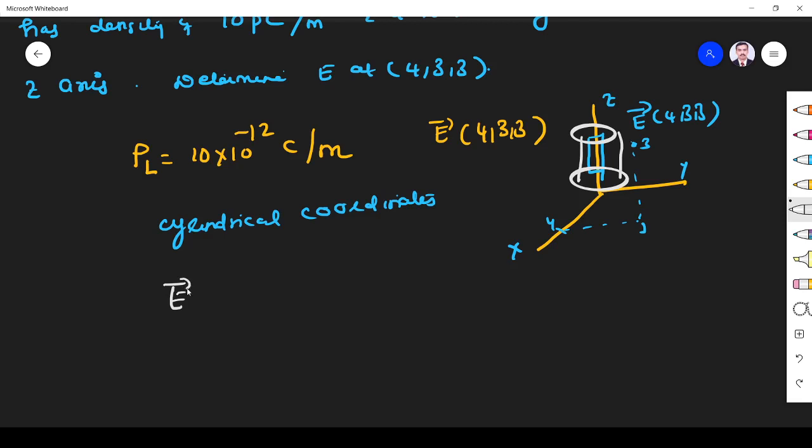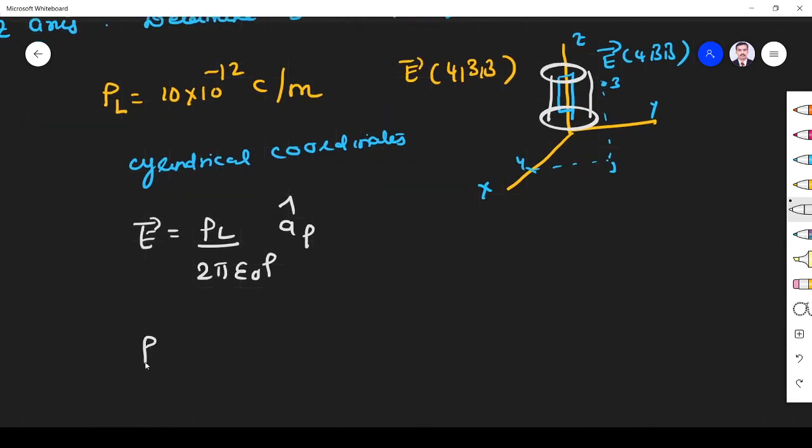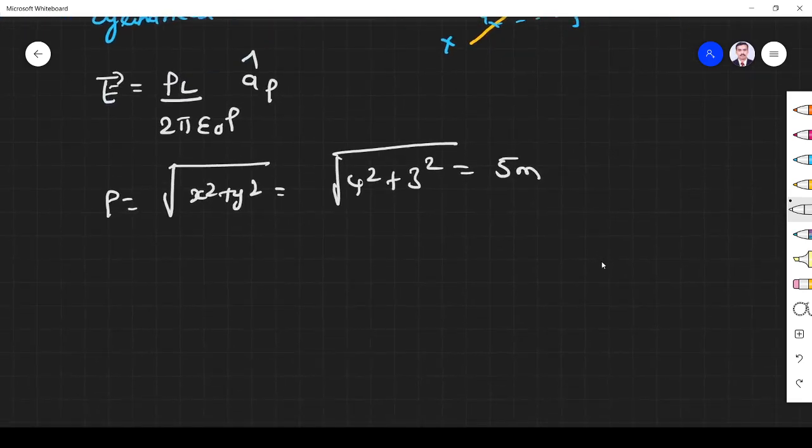We already derived the equation for electric field due to line charge: E = ρL/(2πε₀ρ) aρ. We know ρL, and we need ρ. From x, y, z coordinates where x=4, y=3, z=3, for cylindrical coordinates ρ = √(x²+y²) = √(4²+3²) = 5 meters.